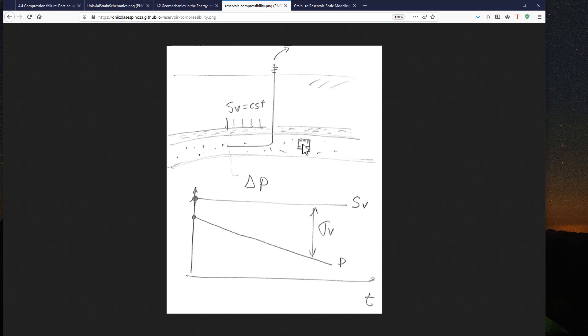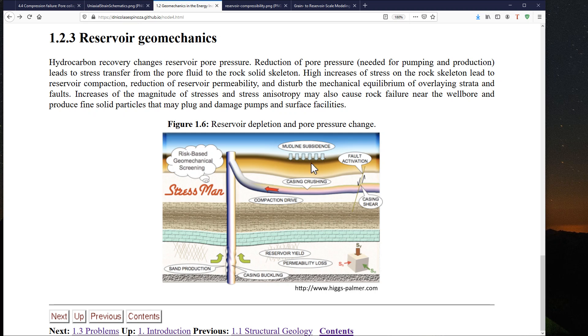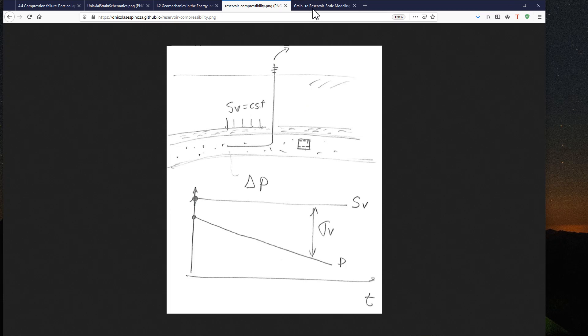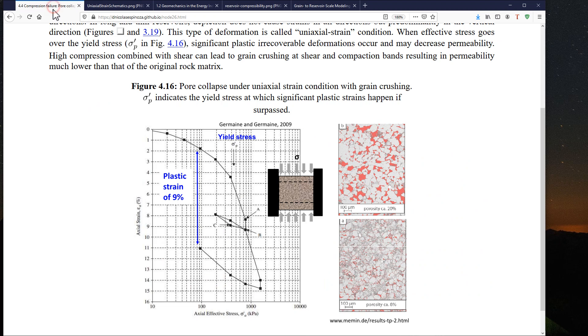We care about this because sometimes, if we compact the formation too much, we might have, as shown in the previous figure, subsidence of the seafloor if we are in offshore conditions, or of the land surface if we are in onshore conditions, which might not be good, might not be beneficial. But also, this could happen in loss of permeability in the formation itself. In order to avoid that, what we want to know is what is that maximum yield stress such that I do not go into significant decreases of porosity and significant decreases of permeability.